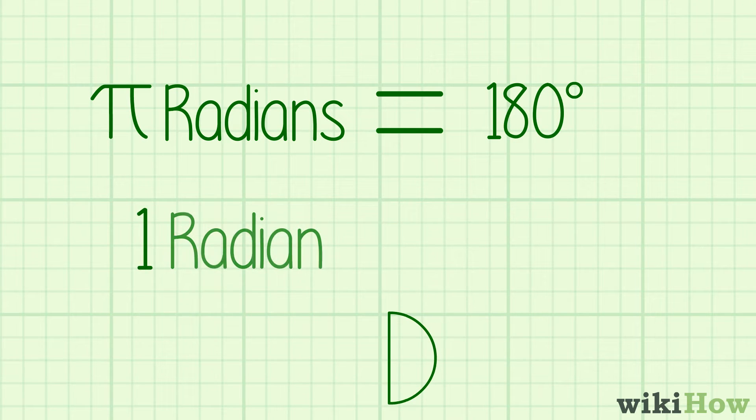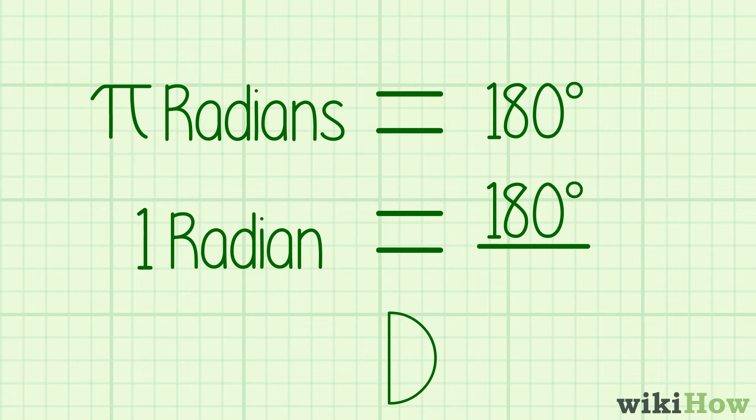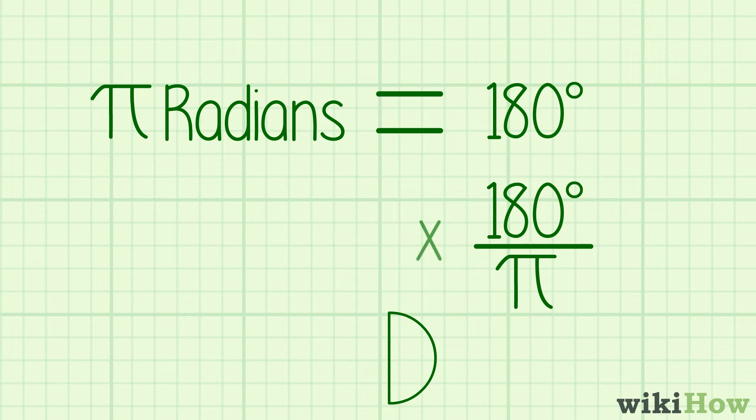That means that one radian is equal to 180 degrees divided by pi. So, in order to convert radians to degrees, all you have to do is multiply the number of radians by 180 divided by pi.